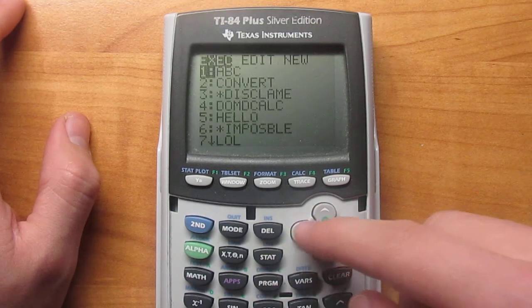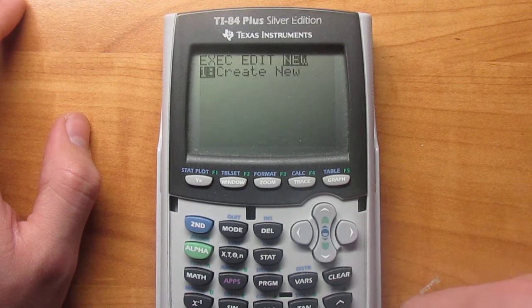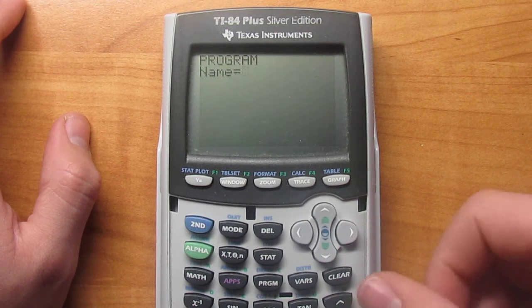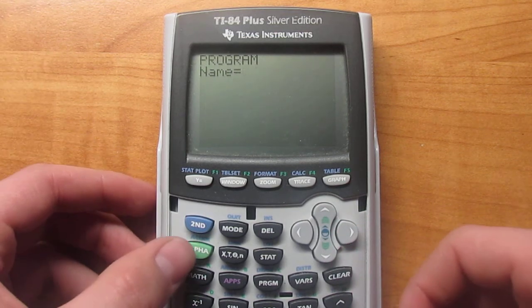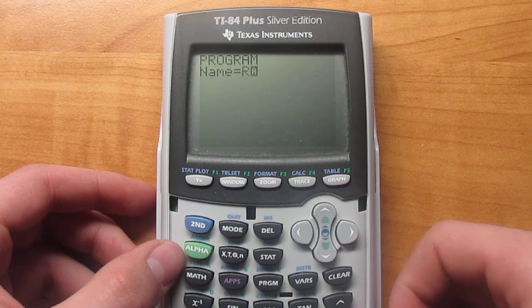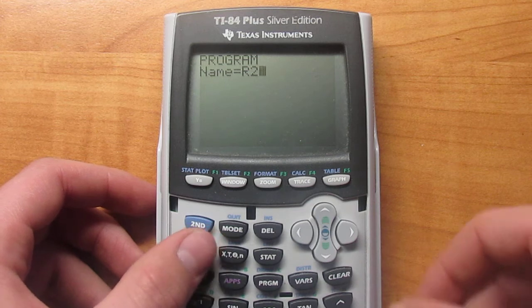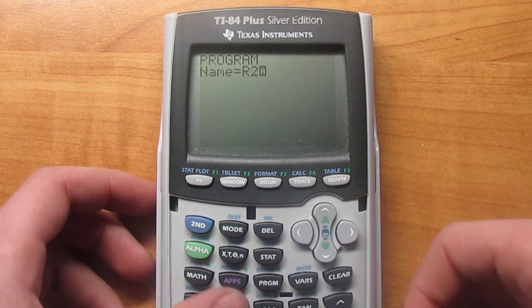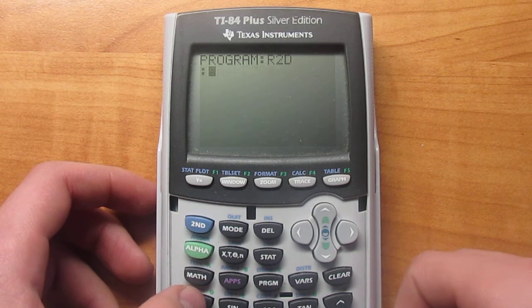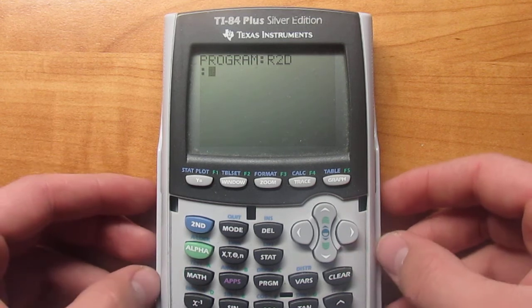Open up your programs, make a new one. And we're going to name it R2D. So that's multiplication sign, alpha, the number 2, alpha again, D. Alright, now that we have that,